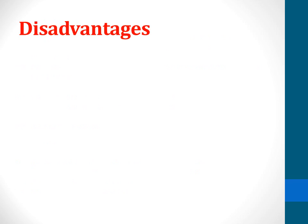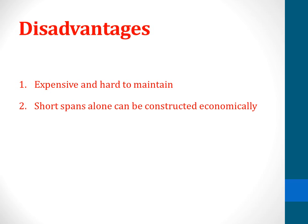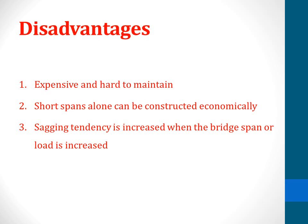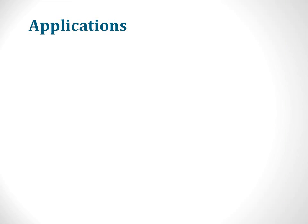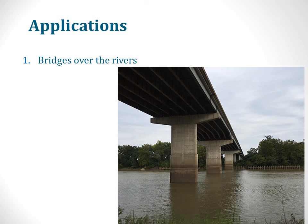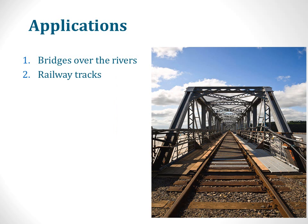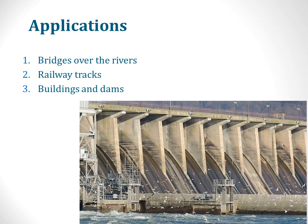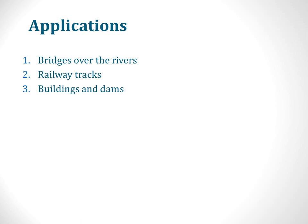Some disadvantages of the I-shaped girder are that it is expensive and hard to maintain, and only short spans can be constructed economically. Sagging tendency increases when bridge span or load is increased. It is used in various areas such as in the construction of bridges over rivers, in railway tracks, and in the construction of buildings and dams. Thank you for your patient listening.